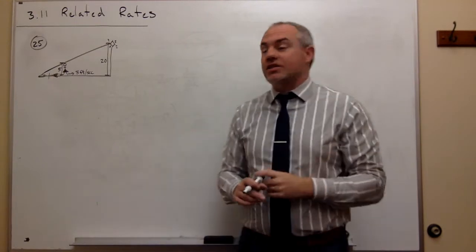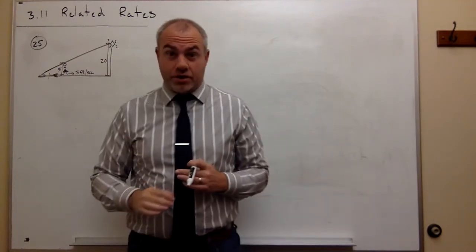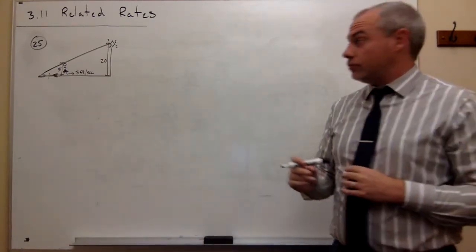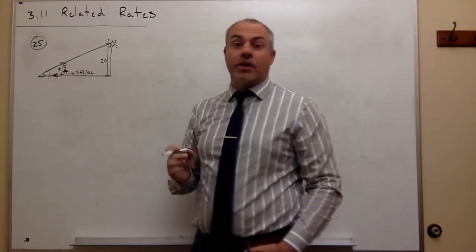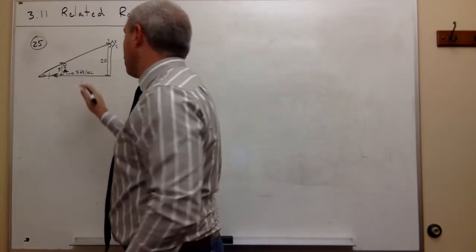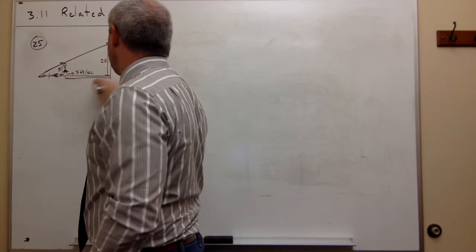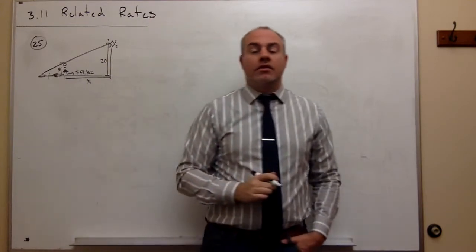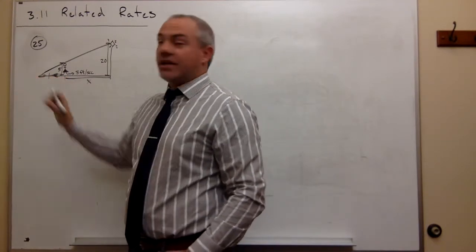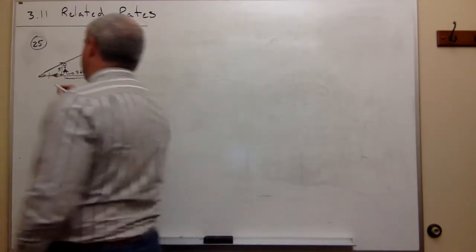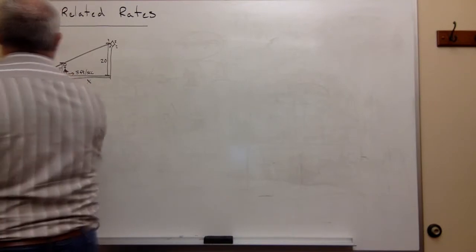The first question we should ask is: what are the things that are really changing that we need to be concerned with in this problem? Certainly the distance between the woman and the street lamp is changing, so I need to give that a variable — I'll call that distance x. The other thing that's changing is the distance between the woman and the tip of her shadow, and I'll call that distance y.